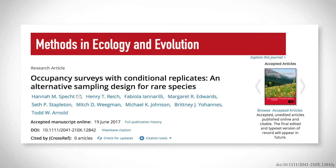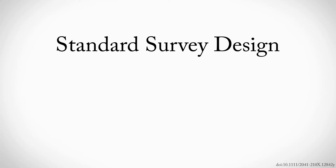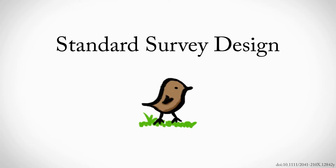So we've developed a new conditional occupancy survey design to improve occupancy estimates for rare species. Before we explain our new design, we'll start with an example of a standard occupancy survey for the rare Little Brown Bird, which is only found at about 10% of sites, and which we only see about 50% of the time even when it's there.